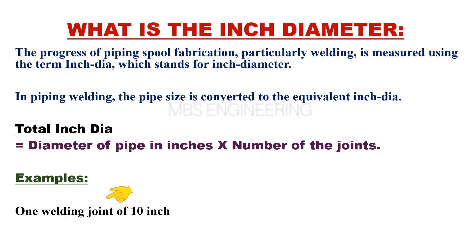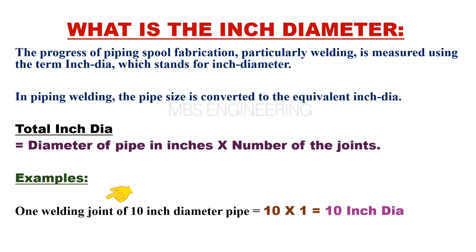To calculate the inch dia for 1 welding joint of a 10-inch diameter pipe: 10 multiplied by 1. Therefore, the total inch dia is 10.